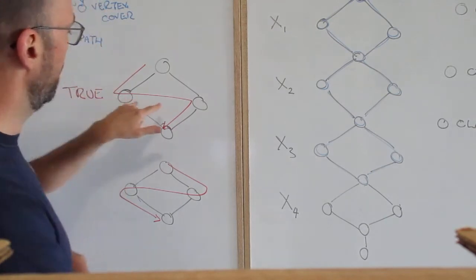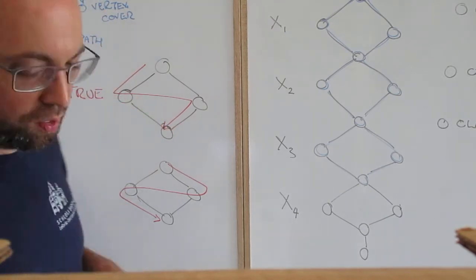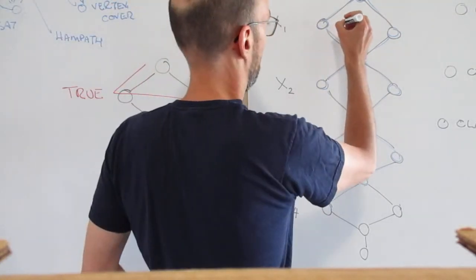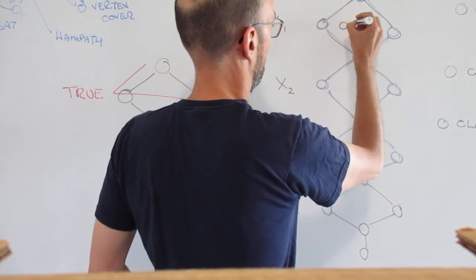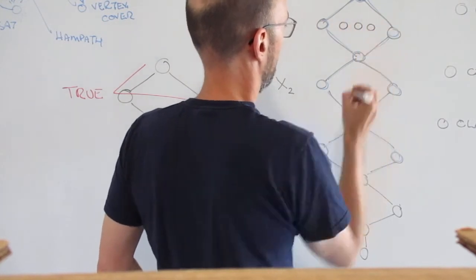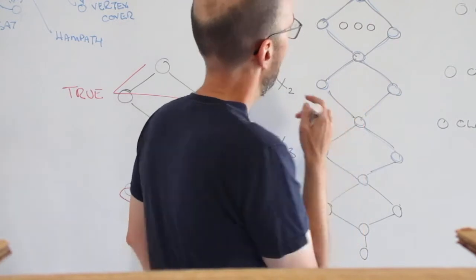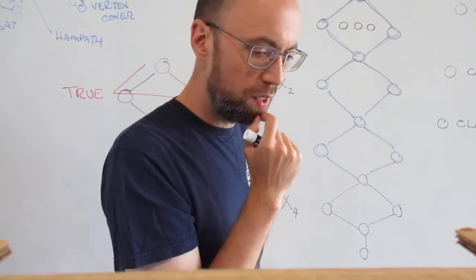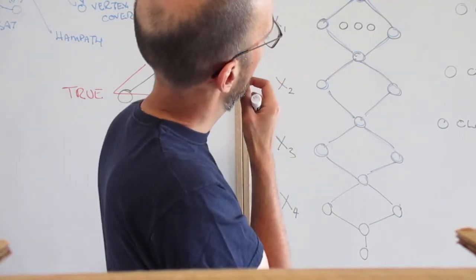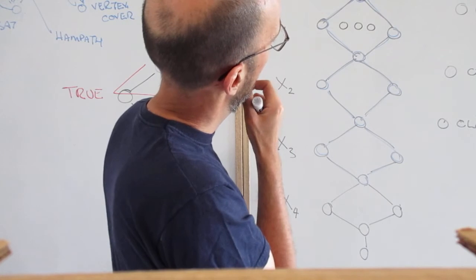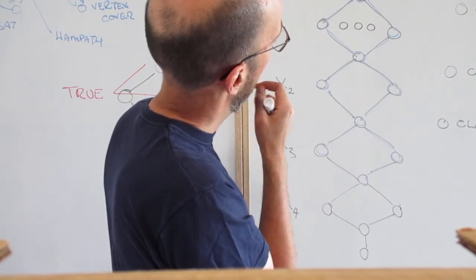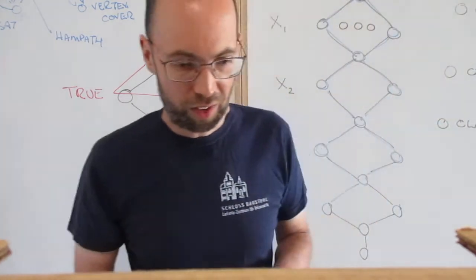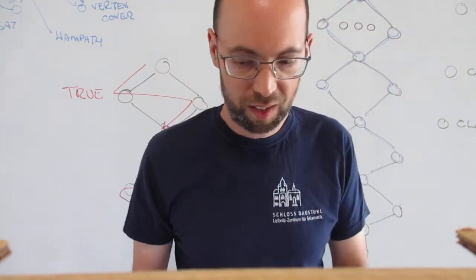You have to put the path in in such a way — basically you're going to put a little chain of vertices in here. Maybe it has to be a directed Hampath. I don't — just a second, I have to check my notes again.